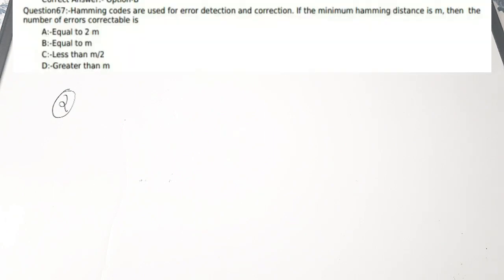If you are preparing for any competitive examination, my suggestion is to do maximum previous year questions so you get the standard of questions. The second question: Hamming codes are used for error detection and correction. If the minimum Hamming distance is m, then the number of errors correctable is — (a) equal to 2m, (b) equal to m, (c) less than m/2, (d) greater than m.